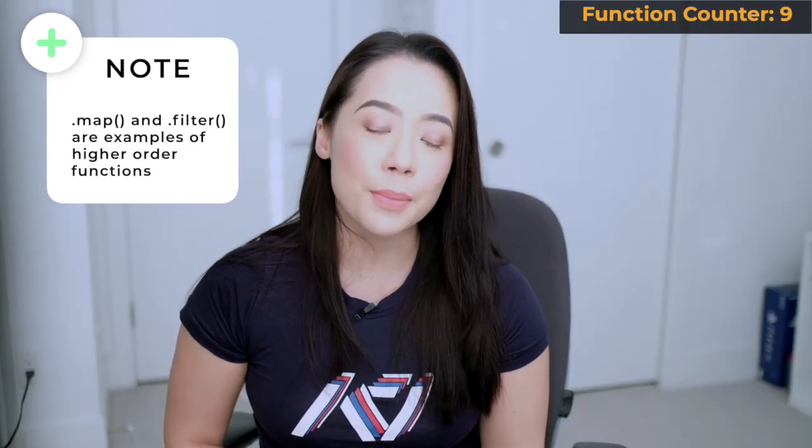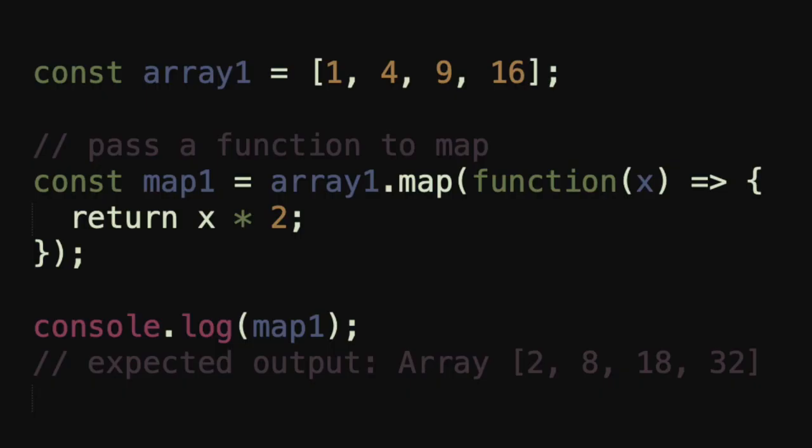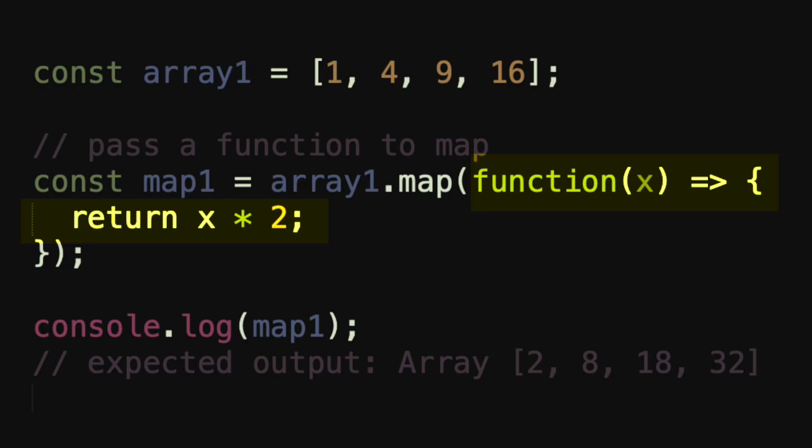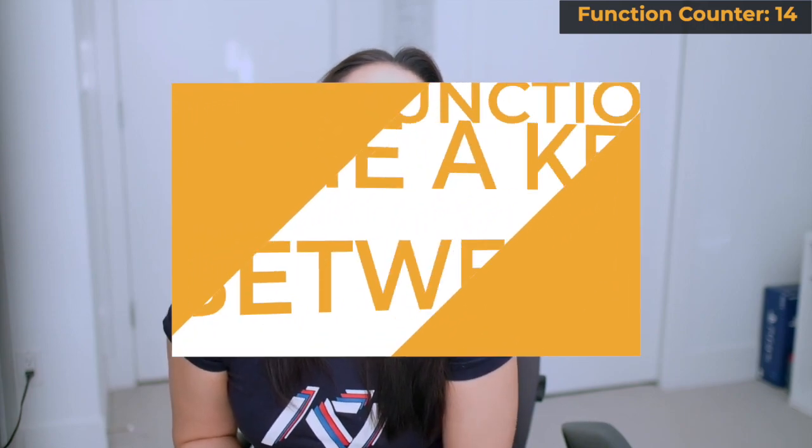Map and filter are built-in array methods that are extremely popular examples of higher order functions. Dot map loops through each element in an array and returns a new array. We tell dot map what to do with each element by passing in a callback function, which tells the function what we want to do with every element as we loop through. Because dot map takes in a function as a parameter, it's called a higher order function.